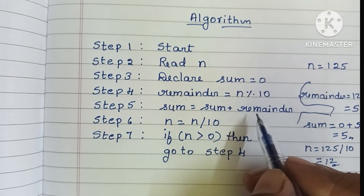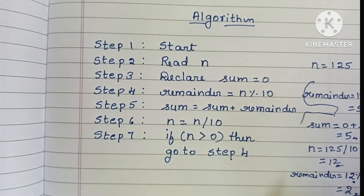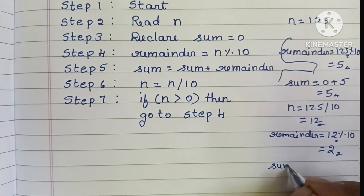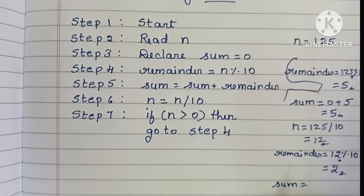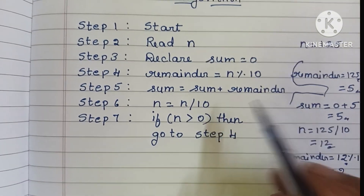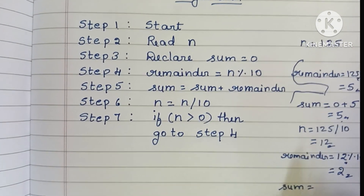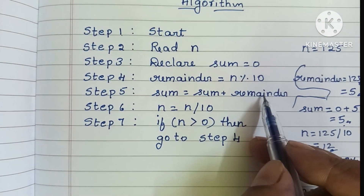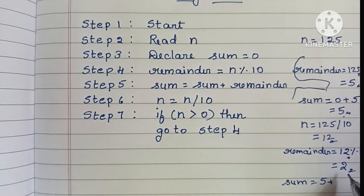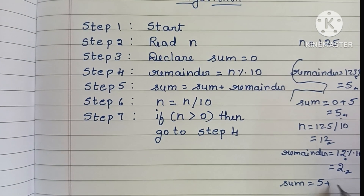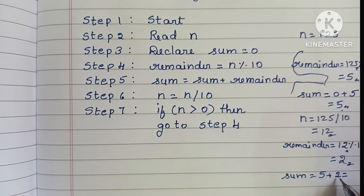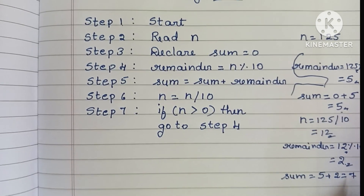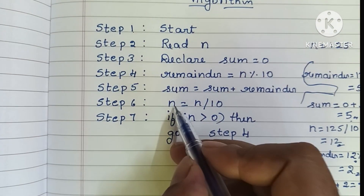In step 5, sum = sum plus remainder. The current value of sum is 5, and remainder is 2, so sum becomes 5 plus 2 equals 7.